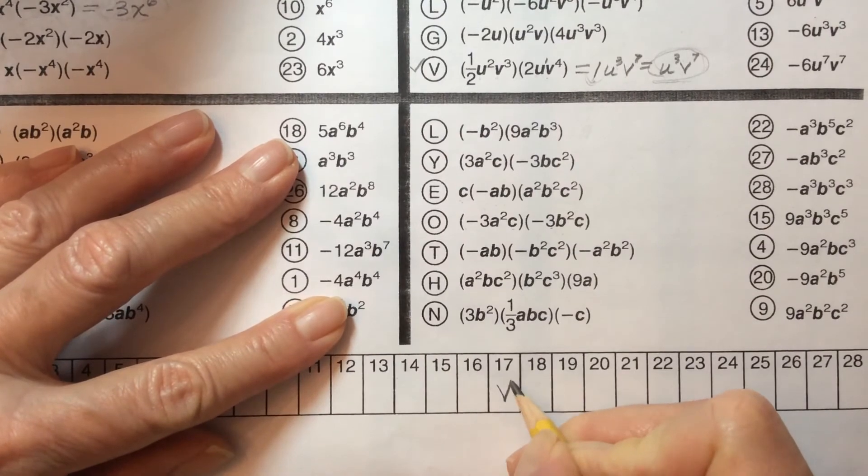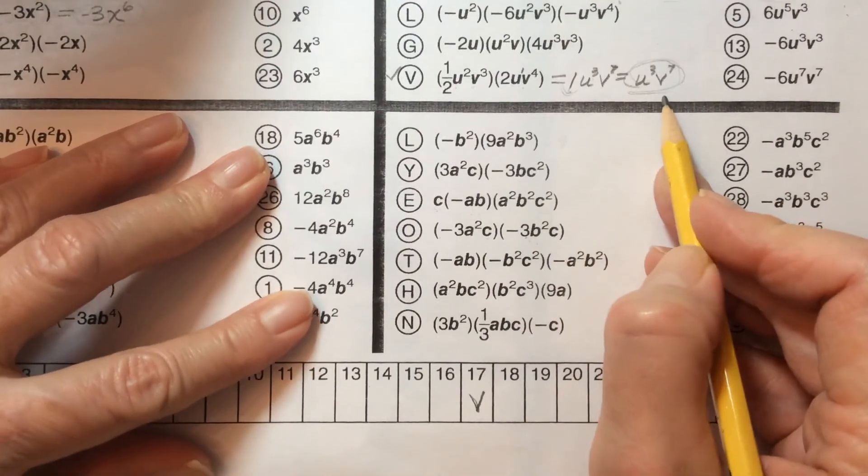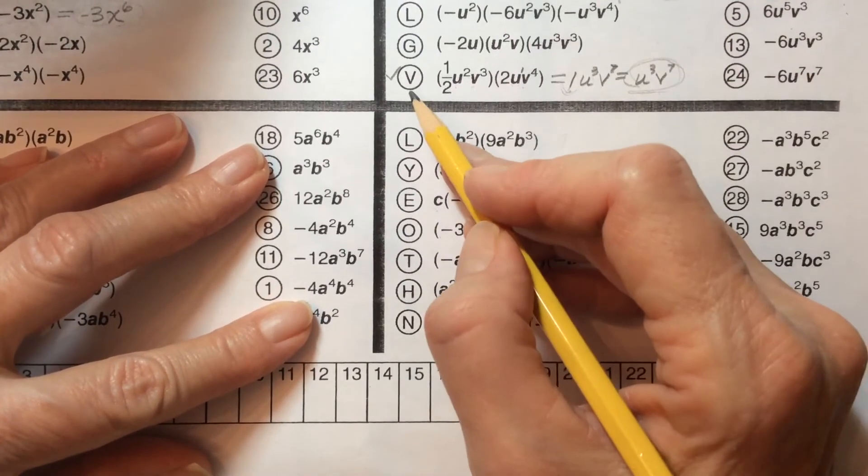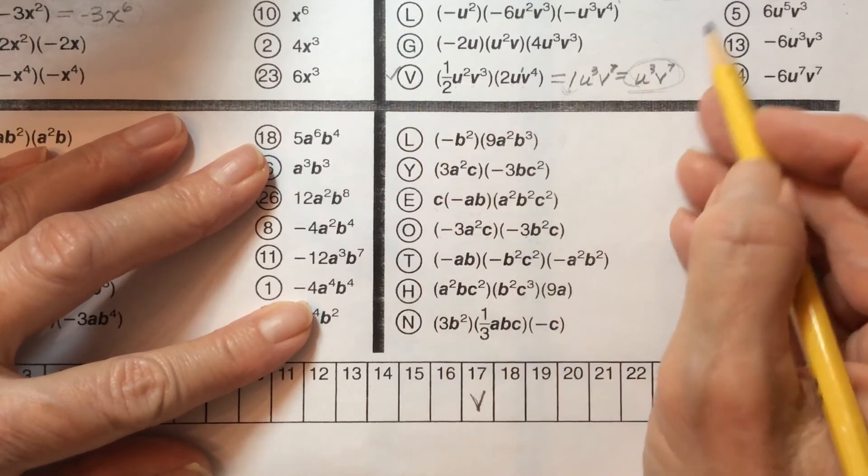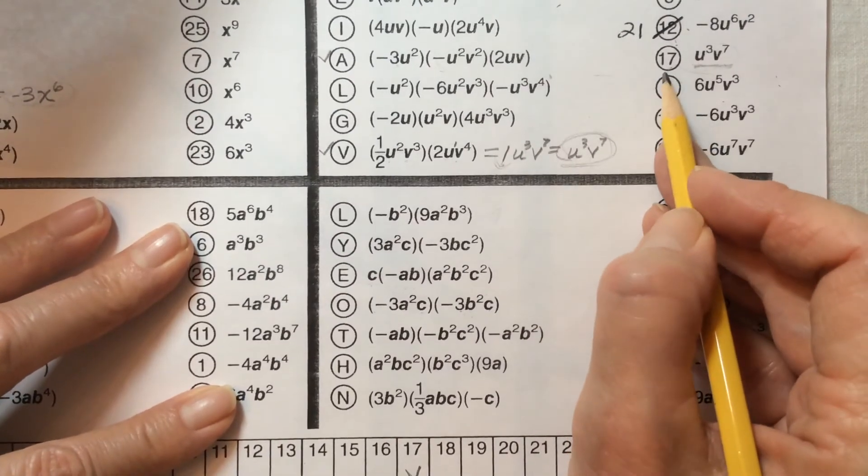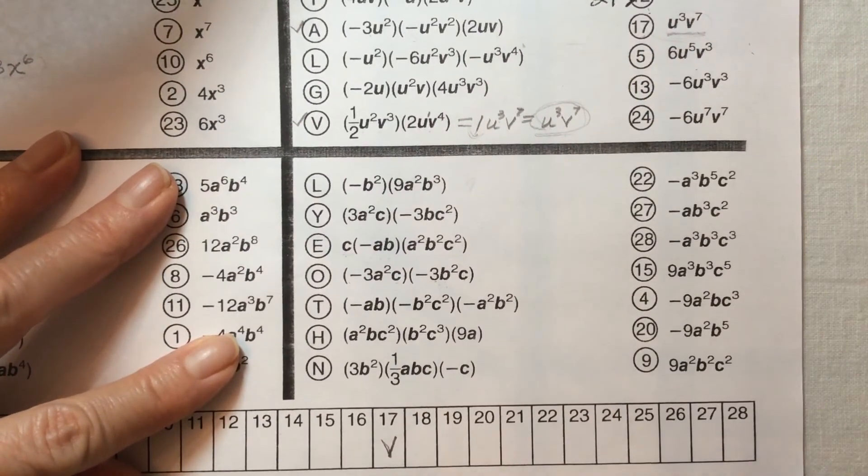So wherever you match up the answer to a number then you can take the letter for that problem and insert it where that number is. So for 17 the answer was v.